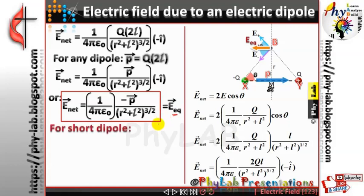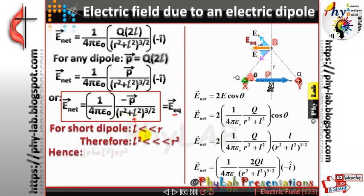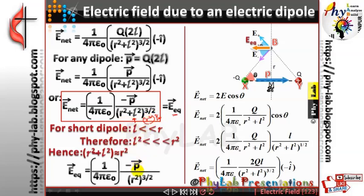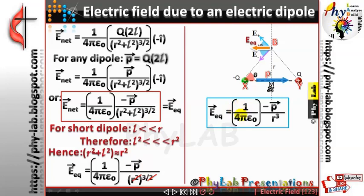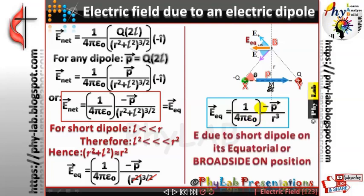For a short dipole, L is very small compared to R, so L² is negligible and R²+L² ≈ R². Therefore (R²+L²)^(3/2) ≈ R³, and the expression simplifies to: E_equatorial = −(1/4πε₀) × P/R³. This is the expression for the electric field due to a short dipole at its equatorial or broadside-on position, directed opposite to the dipole moment.